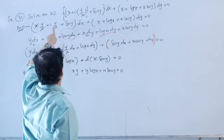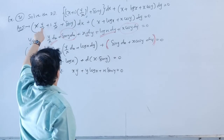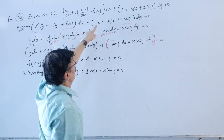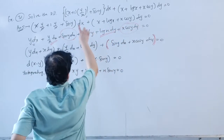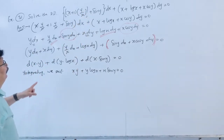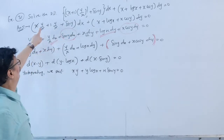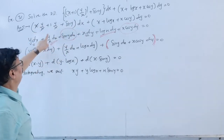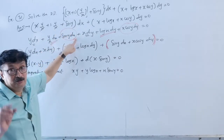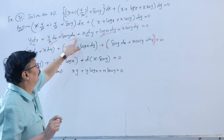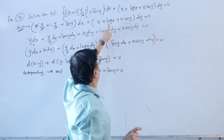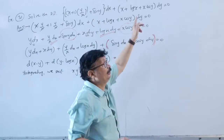After expanding: x·(y/x) gives y, so the terms become y·dx + (y/x)·dx + sin(y)·dx from the first bracket, and x·dy + log(x)·dy + x·cos(y)·dy from the second bracket. The key idea is to bring x·dy and y·dx close together.